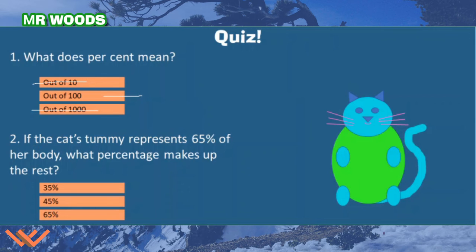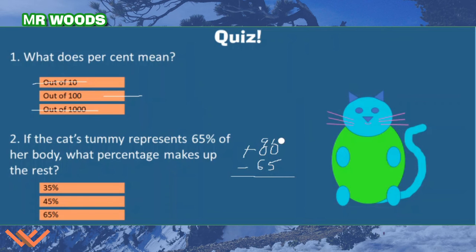Number two: if the cat's tummy represents 65% of her body, what percentage makes up the rest? Well, we have 65% out of 100. So I subtract 65 from 100: 10 minus 5 is 5, and 9 minus 6 is 3 — so that's 35%.